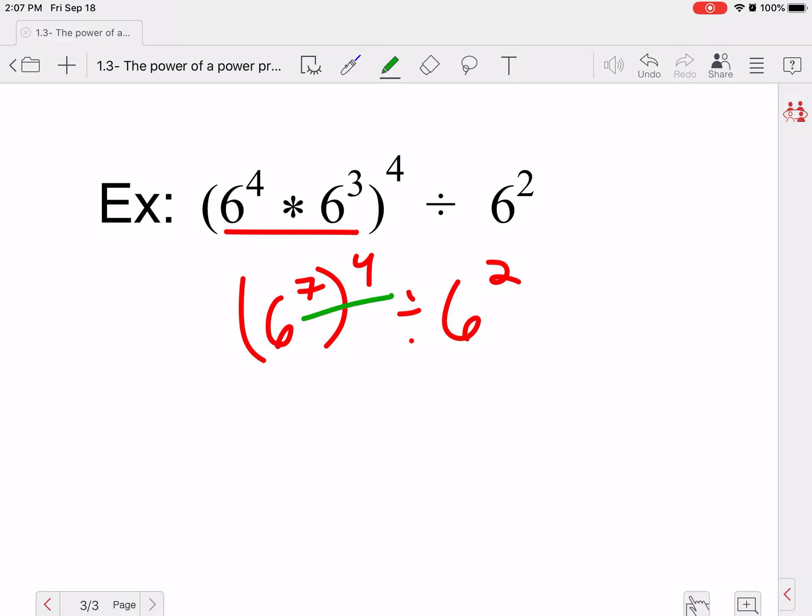Now I can do my power rule. So six to the seventh to the fourth would be seven to the fourth would be to the 28th because I'm multiplying divided by six squared. So notice I kind of did this stuff in parentheses. Then I took care of my power to a power rule, and then I can take care of my quotient rule.